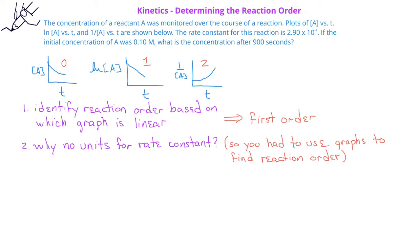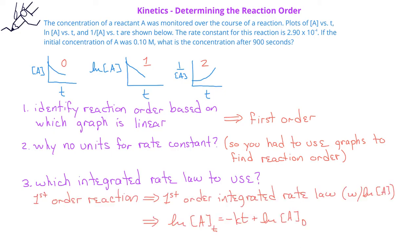Now that we know this is a first order reaction, we'll need to decide which integrated rate law to use to determine the concentration of A after 900 seconds. Since we have a first order reaction, we'll use the first order integrated rate law, which is: the natural log of the concentration of A at time t is equal to negative rate constant times time, plus the natural log of the initial concentration of A.